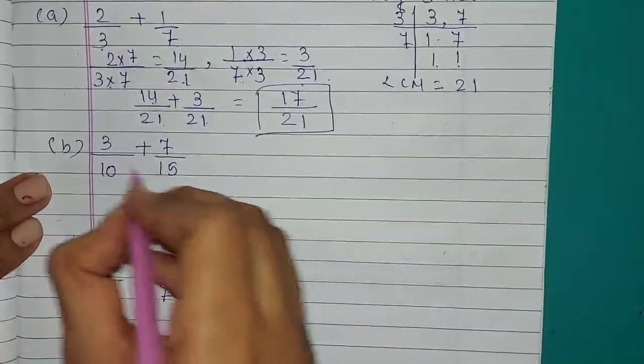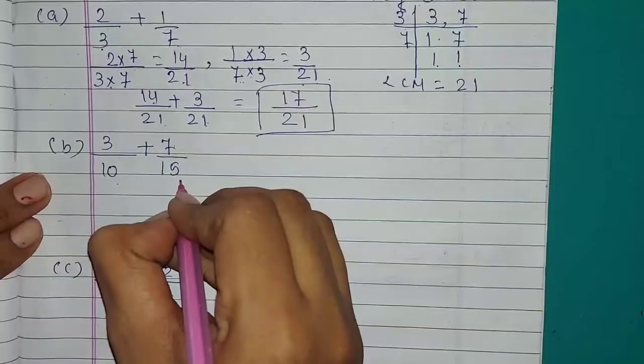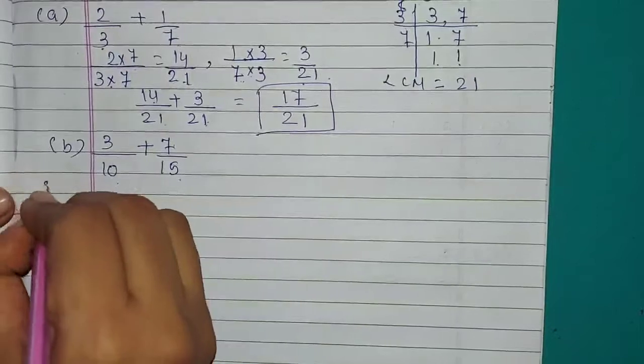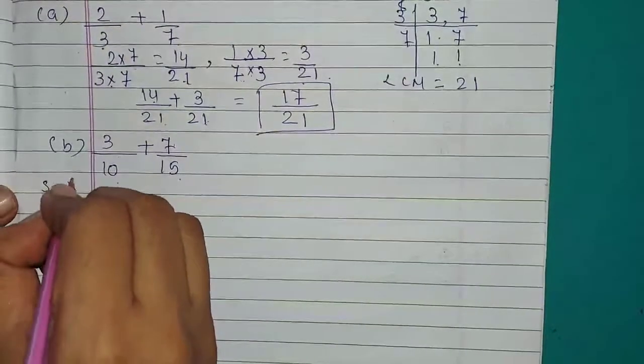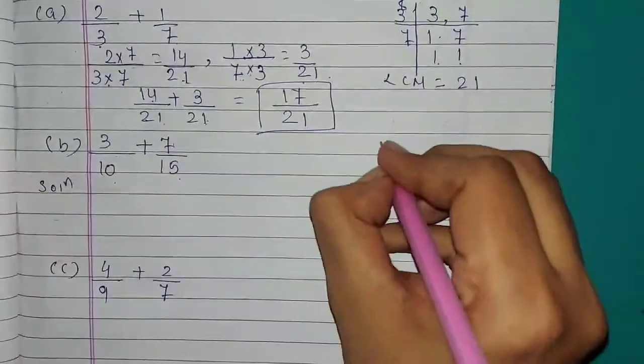Next question, number B: 3 upon 10 plus 7 upon 15. We will take LCM of 10 and 15.